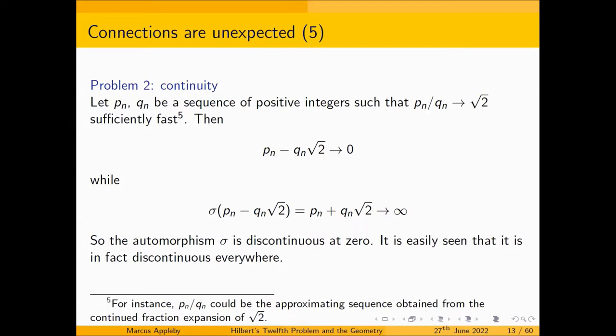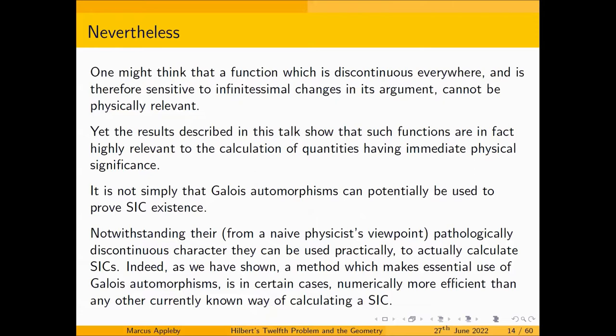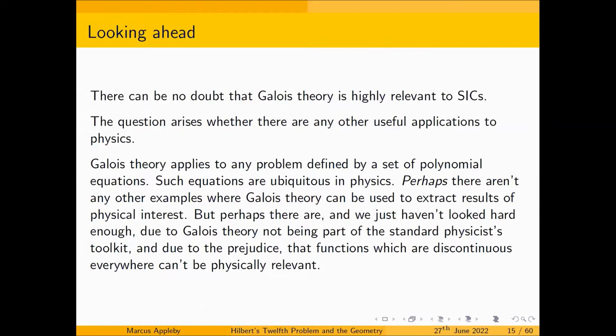For these reasons I originally felt quite resistant to the idea that this could be relevant to the problem. I think it undeniably is relevant, and the final evidence for that is the fact you can actually directly use it to make calculations you can't easily make any other way, producing physically relevant numbers. So the reasoning was all wrong — Galois automorphisms are relevant to physics, certainly in the context of the SIC problem. And it raises the question of whether there are other instances.